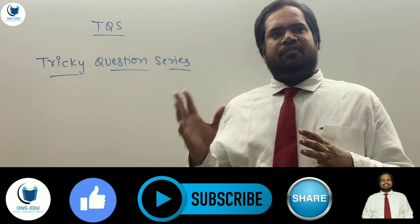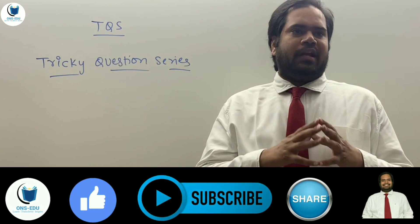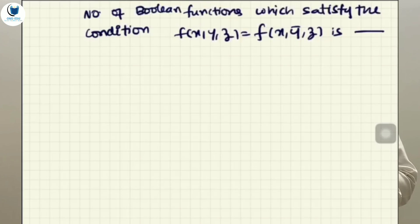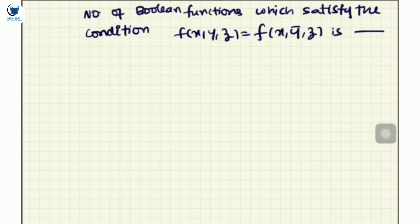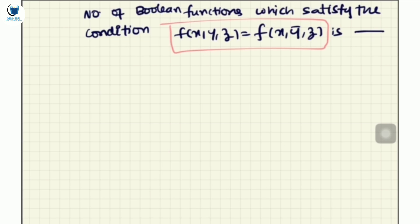Friends, please definitely do try these questions. Let's see this question: the number of Boolean functions which satisfy the condition f(x, y, z) = f(x, y_bar, z). So what does this mean and how can we prove it? Let's find out.